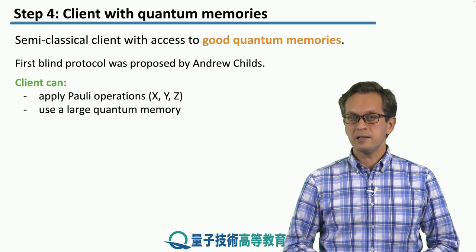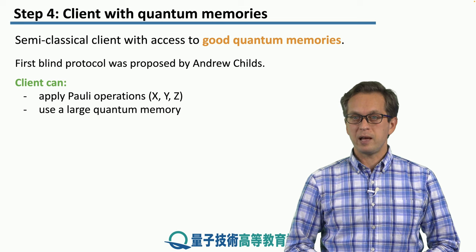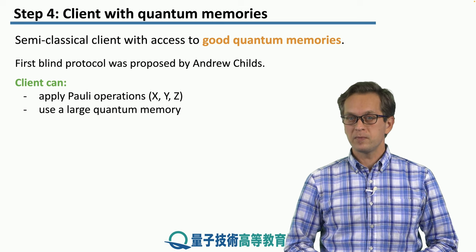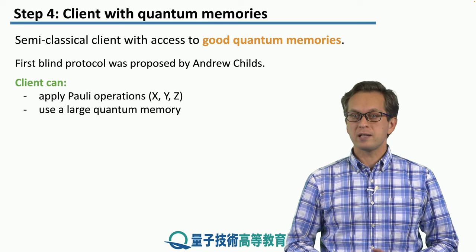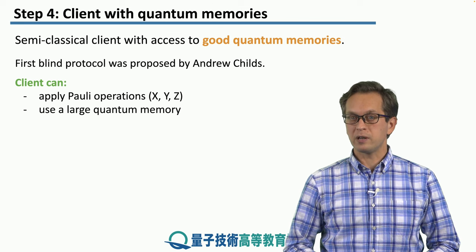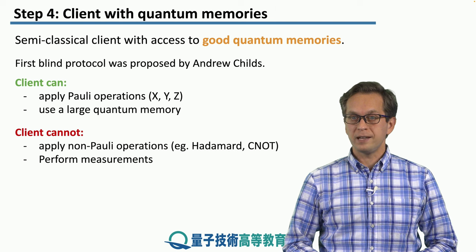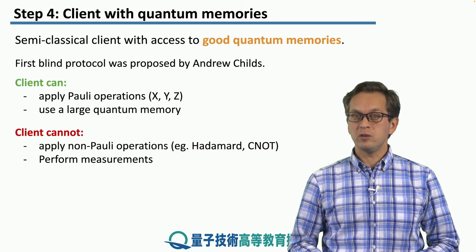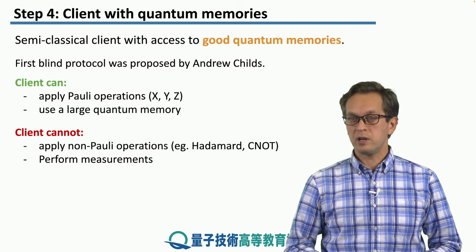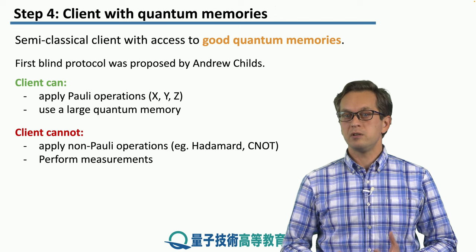The client has the following quantum resources. It can apply Pauli operations: X, Y, and Z. It also has access to a large good quantum memory where the client can store many qubits. On the other hand, the client cannot apply non-Pauli operations, such as a Hadamard gate or a two-qubit gate such as a CNOT gate.